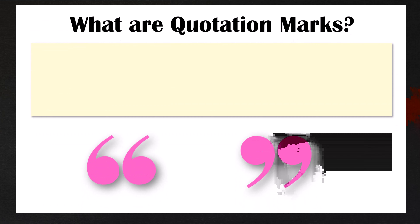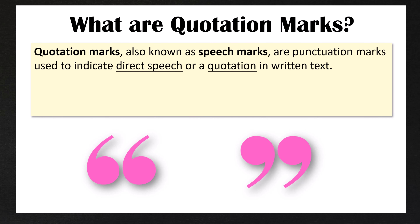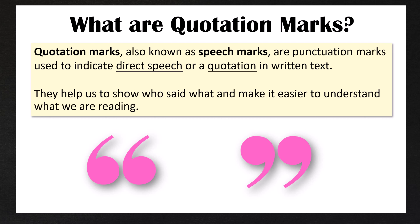First of all, what are quotation marks? Quotation marks, also known as speech marks, are punctuation marks used to indicate direct speech or a quotation in written text. They help us to show who said what and make it easier to understand what we are reading. Quotation marks always come in pairs.